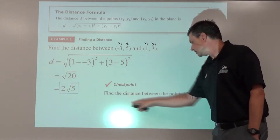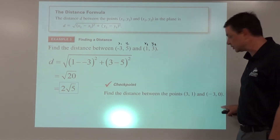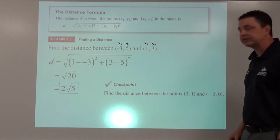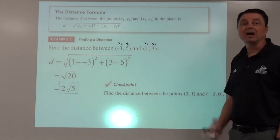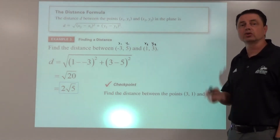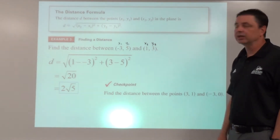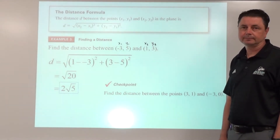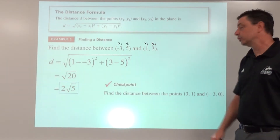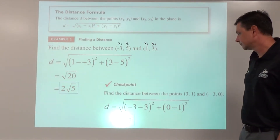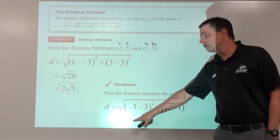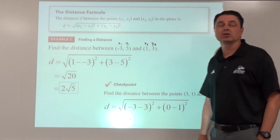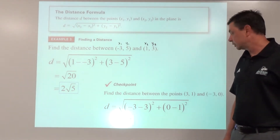Checkpoint: see if you can find the distance between these two points — 3 comma 1 and negative 3 comma 0. Pause the video here, go through it, and see if you can come up with the distance. Hopefully what you got matches the substitution shown here. No simplifying is necessary on this one — the distance between those two points is the square root of 37.